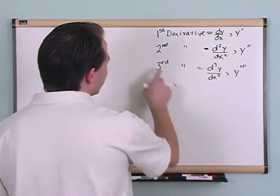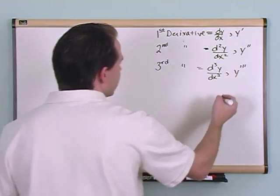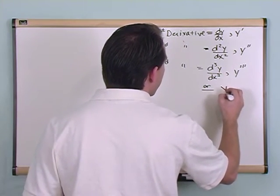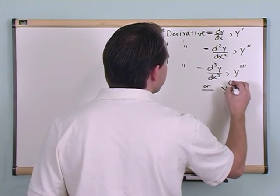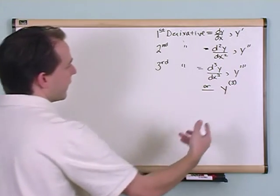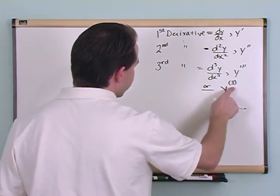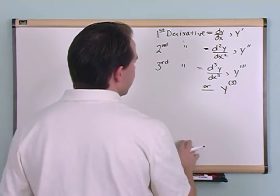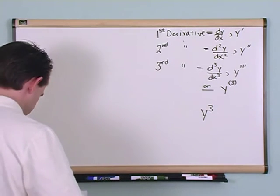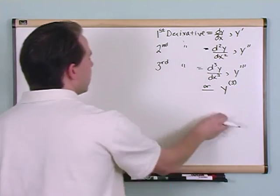And also when you get up to the fourth and fifth and sixth derivative, putting all these little marks is kind of a pain, so another way you can write it as y with a little parenthesis and then a three here. The parenthesis indicates, as a reminder to you, that you're not taking an exponent, this is not y to the third power, this is the third derivative of y, so that's what the parenthesis mean. If you were to write it like this, that would get really confusing after a while because then you might start thinking that you're taking y to the third power or something like that.